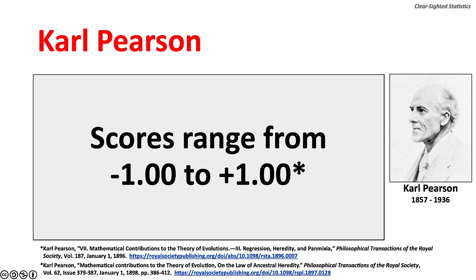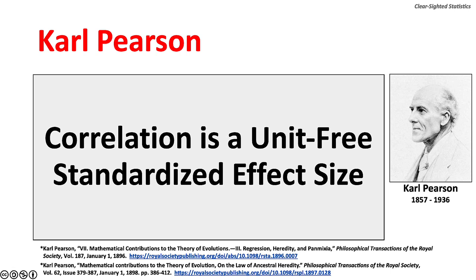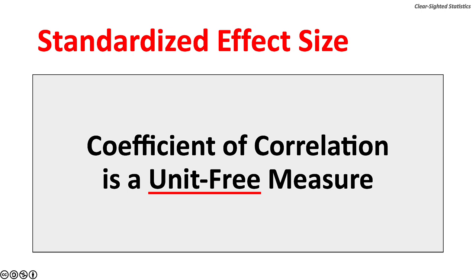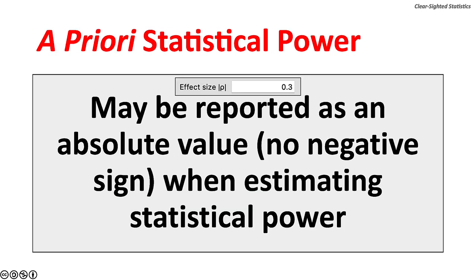Scores for the coefficient of correlation range from negative one to positive one. Correlation is a unit-free standardized effect size, meaning comparisons of correlation coefficients can be made regardless of how the data are measured. The coefficient of correlation, rho, may be reported as an absolute value — with no negative sign — when estimating statistical power.